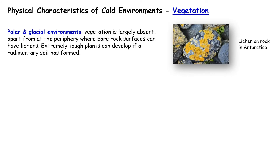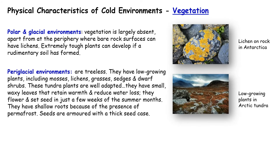Next, the vegetation of cold environments. In polar and glacial areas there is very little vegetation at all — sometimes lichen on rock, but with the coldest ever recorded temperature of minus 89 degrees centigrade in Antarctica, it's just too cold for plants to exist. There's very little or no soil, so vegetation coverage is very sparse. In periglacial environments, these areas are treeless but do have low-growing plants such as mosses, lichens, sedges and dwarf shrubs. All the plants here are very well adapted — they have small waxy leaves to retain warmth and reduce water loss, they flower and set seed in just a few weeks of the summer months, they must have shallow roots, and the seeds are armoured with a thick seed case.